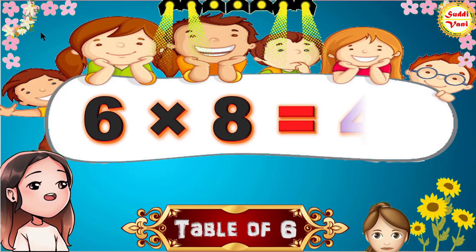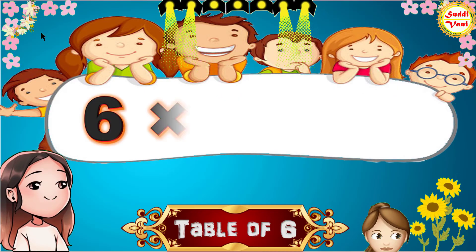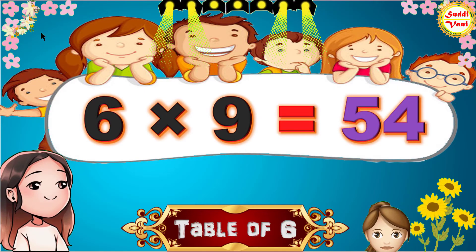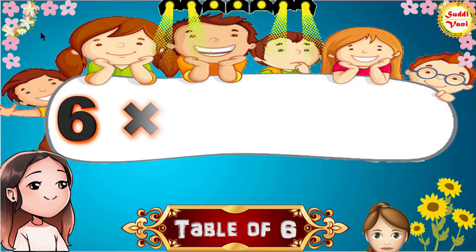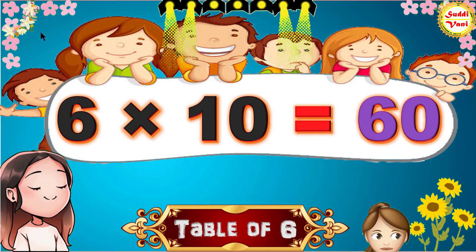Six sevens are forty-two, six eights are forty-eight, six nines are fifty-four, six tens are sixty.